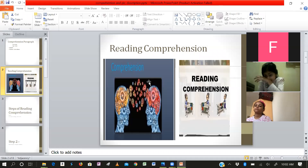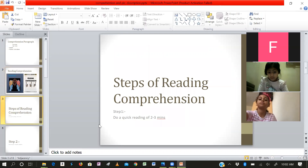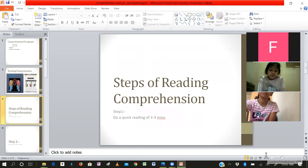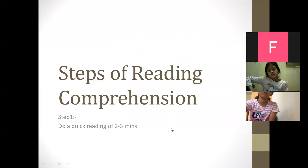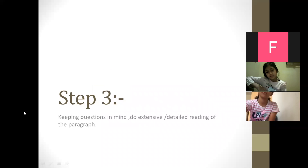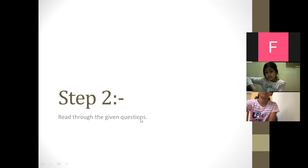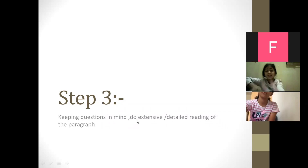As you can see on the display, reading comprehension is our topic for today. Now let us see how many steps are involved. Step one is to do a quick reading of two to three minutes. While you are given the reading paragraph, you are supposed to do a brief reading of only two or three minutes. Once you have done this, the second step is to read through the given questions at the end of the reading paragraph.